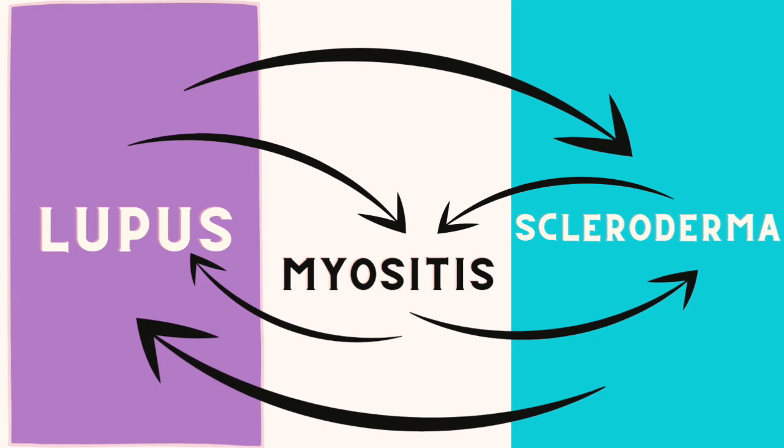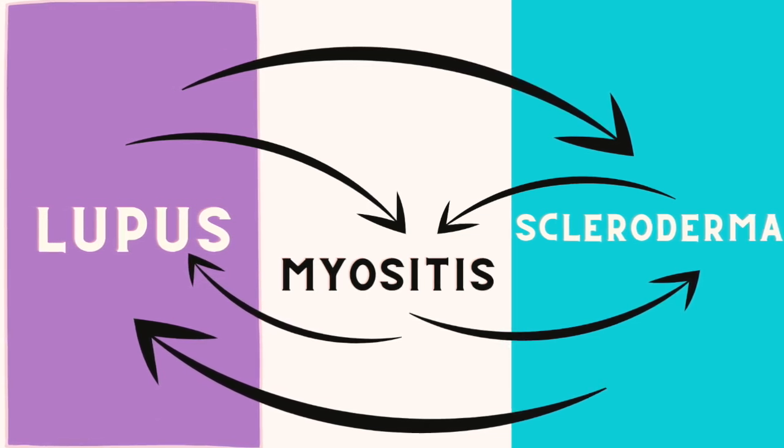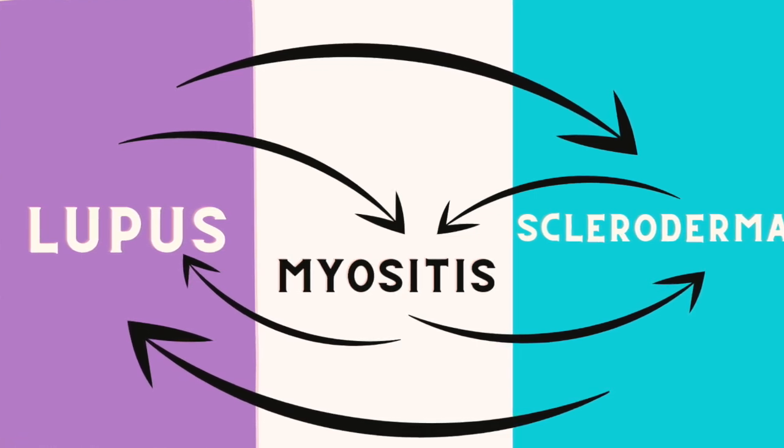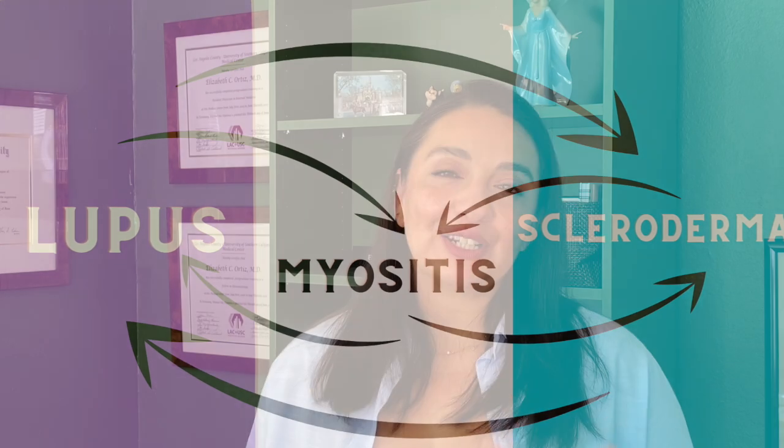So patients with MCTD can have symptoms of all three of these conditions. But what can make things confusing and frustrating is they typically don't have these symptoms all at the same time — they happen over time. And it's for this reason that sometimes patients might start out with the diagnosis of lupus, and then with time, as more symptoms show themselves, it becomes more clear that actually it's not lupus they have — it's MCTD.